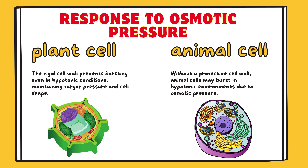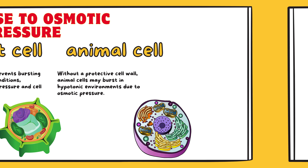Response to osmotic pressure. Plant cell: the rigid cell wall prevents bursting even in hypotonic conditions, maintaining turgor pressure and cell shape. Animal cell: without a protective cell wall, animal cells may burst in hypotonic environments due to osmotic pressure.